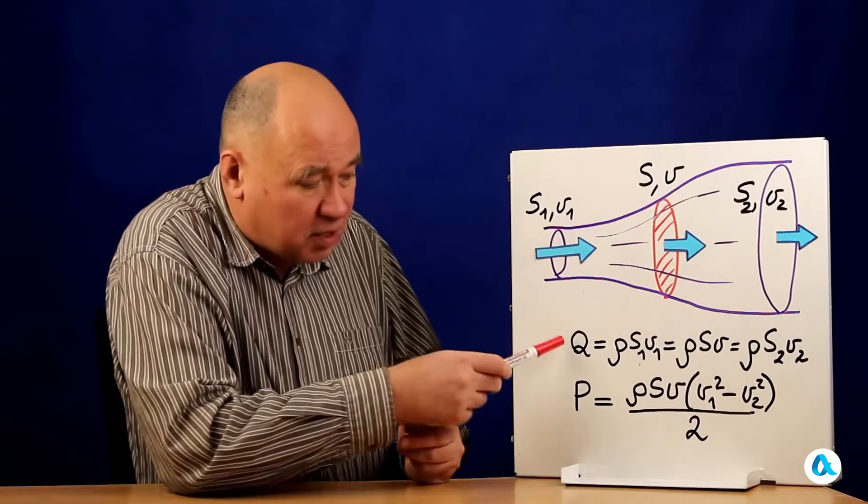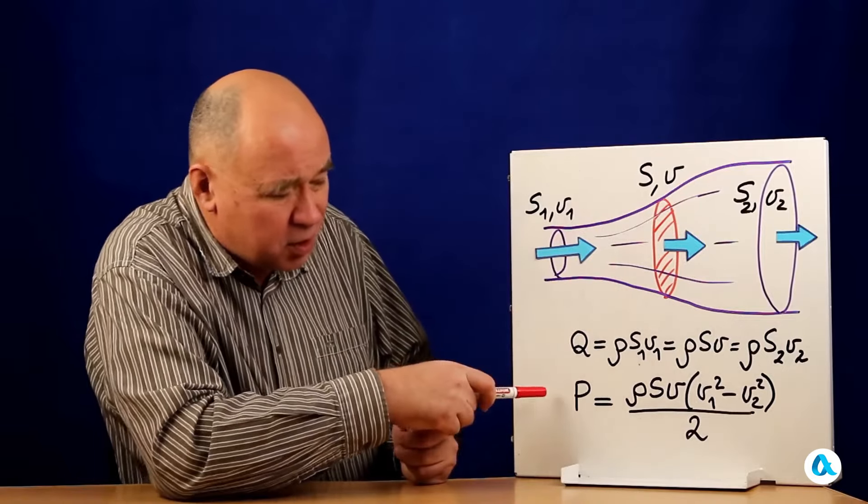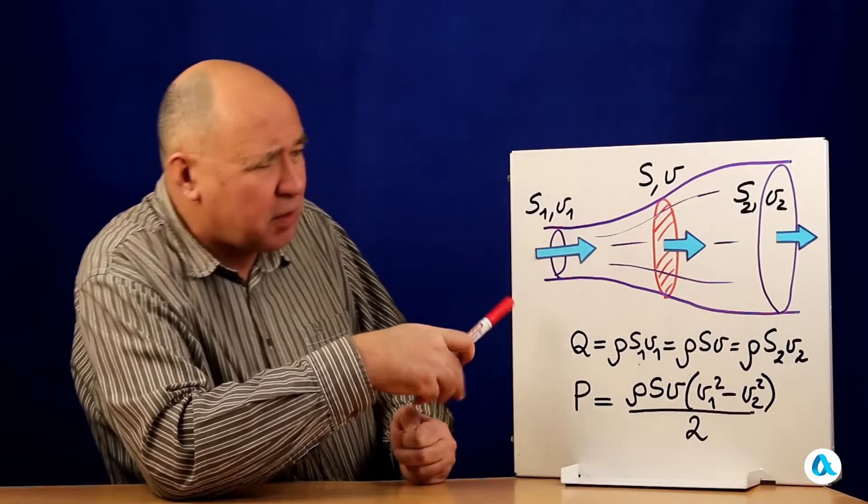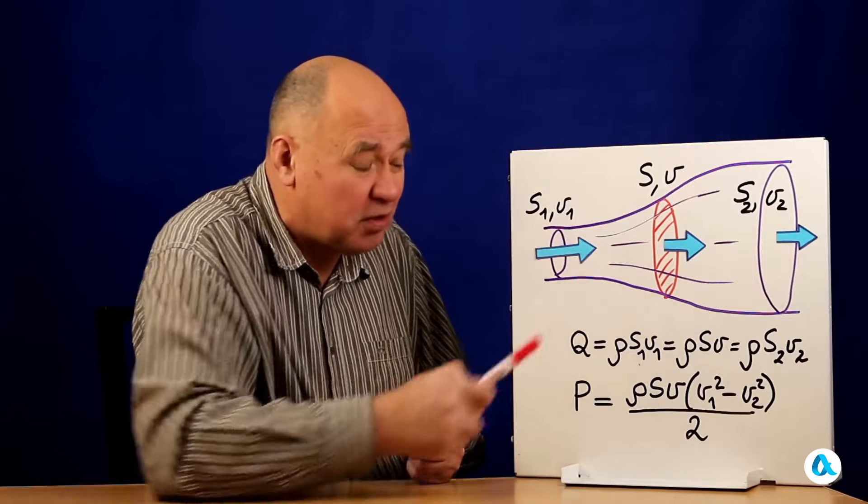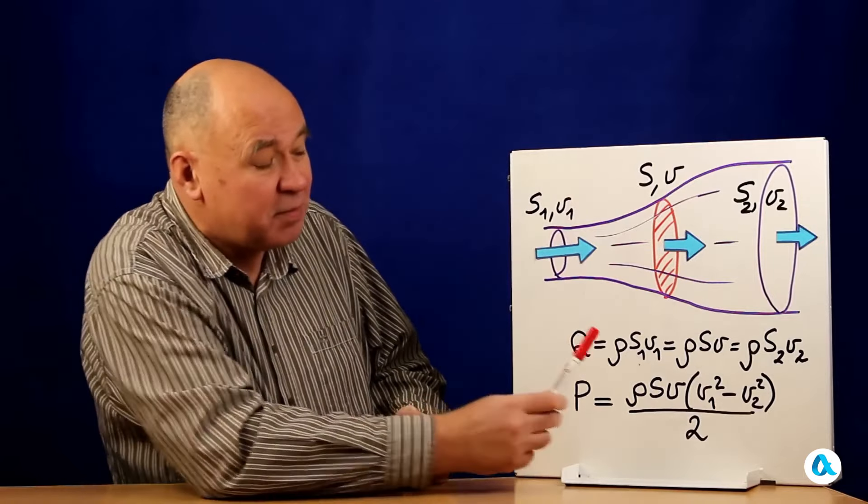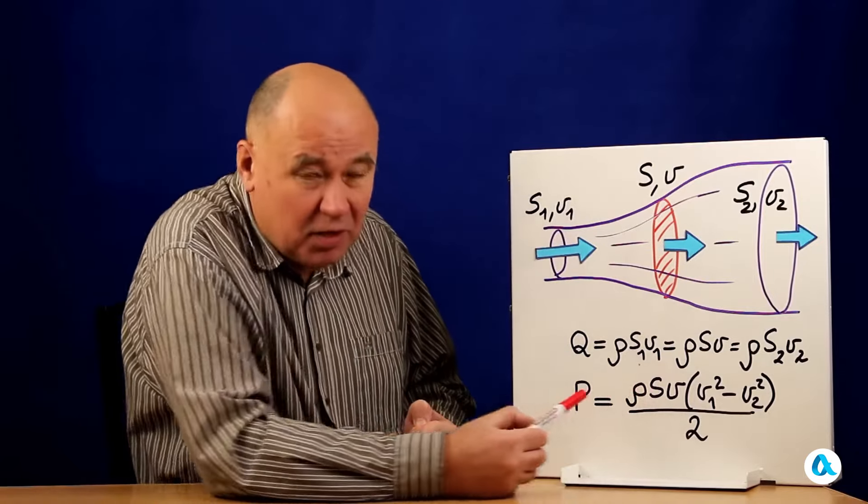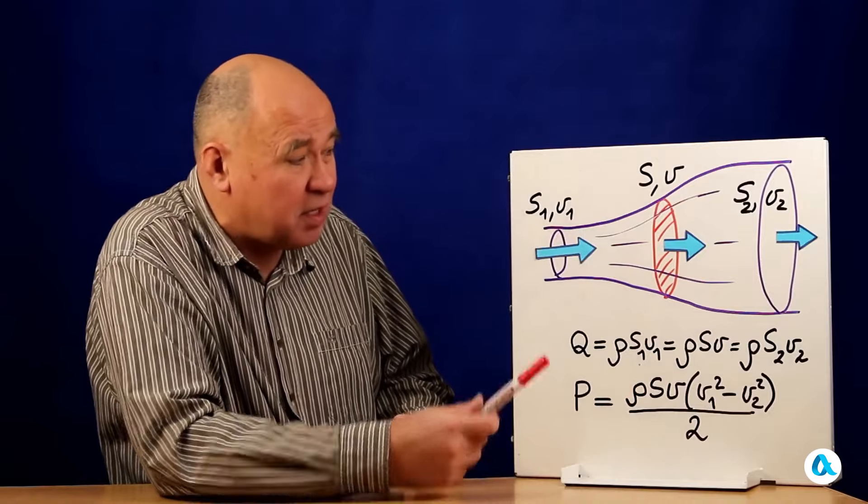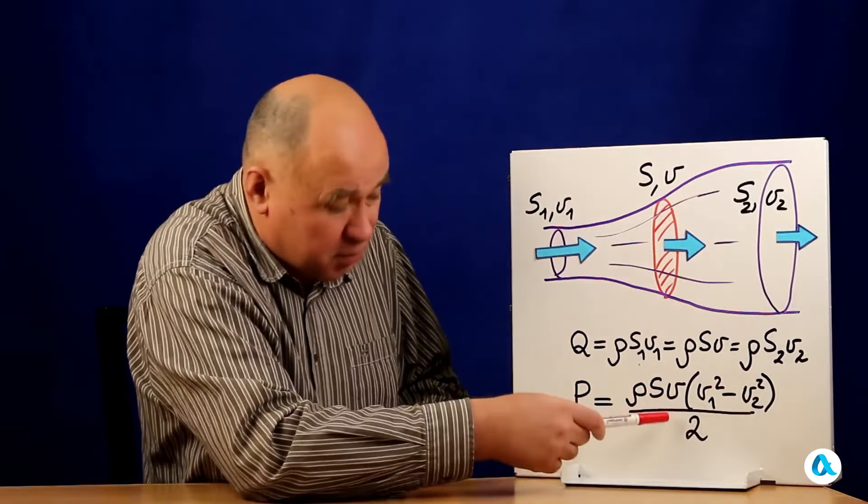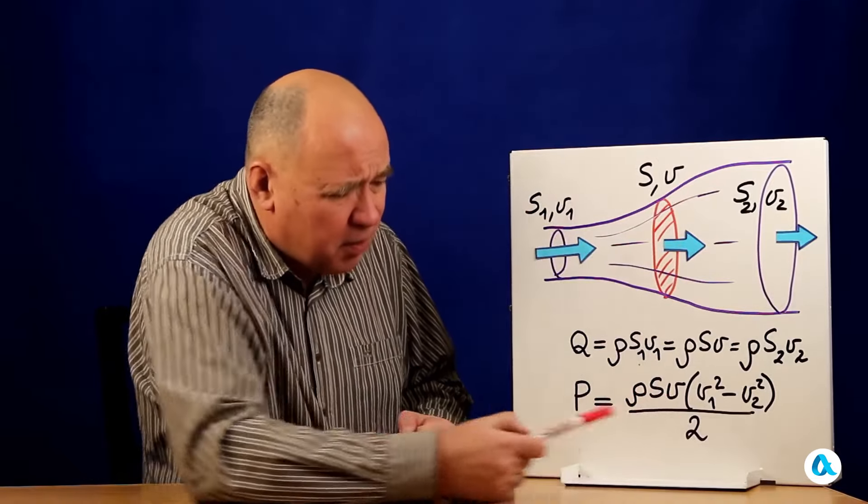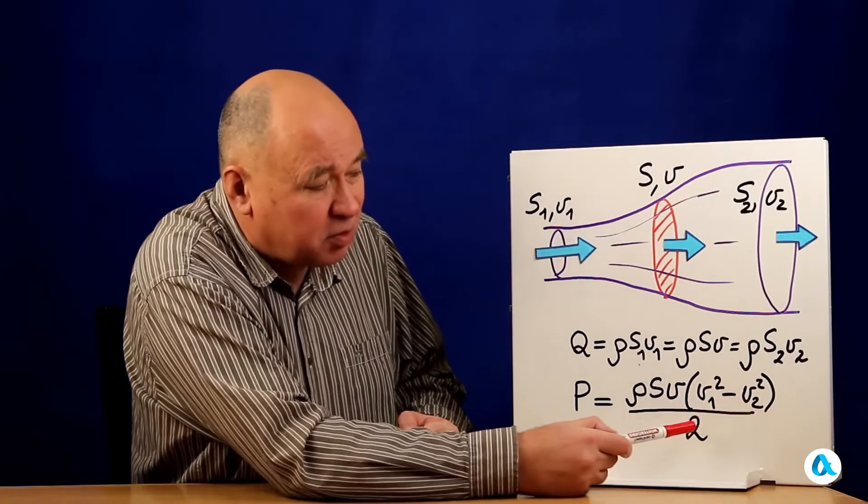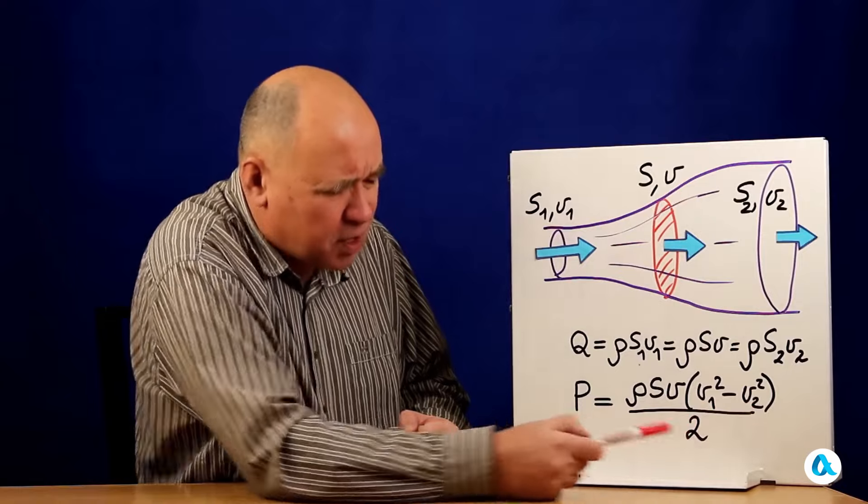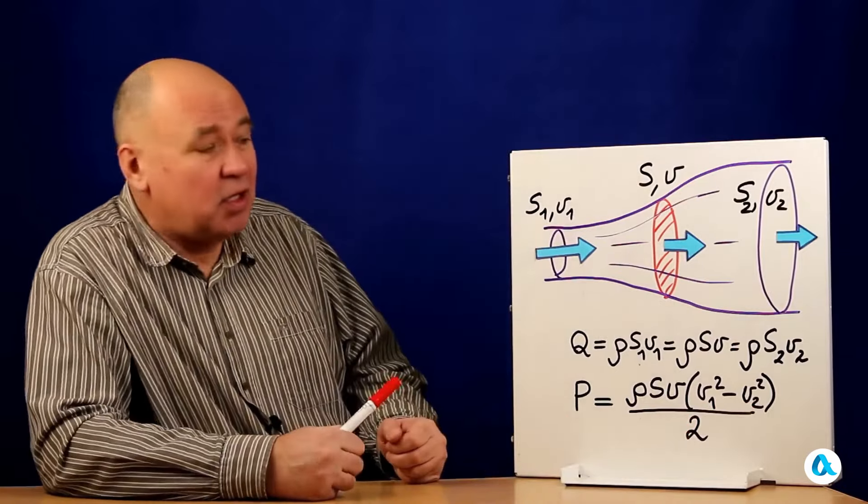Besides q, besides this mass flow rate, we can also write down the power that the airflow transfers to the propeller. This means the mass multiplied by the difference between the square of the speed before and the square of the speed after, and then divided in half again. So this is ρsv, v₁ squared divided by 2, minus v₂ squared divided by 2, but I factored out the 2 here.